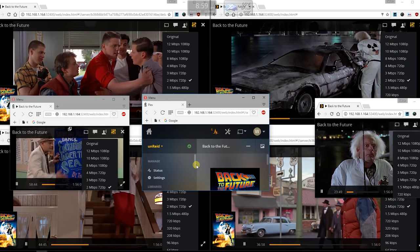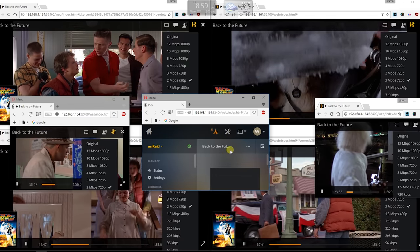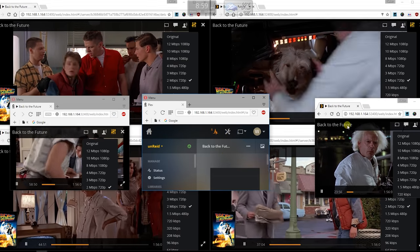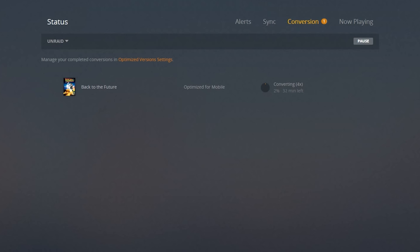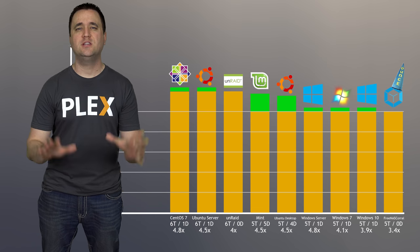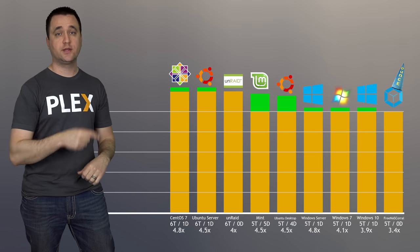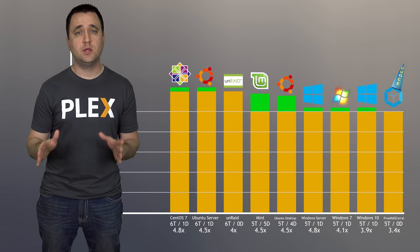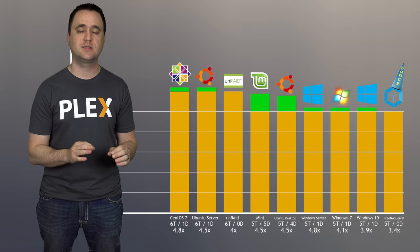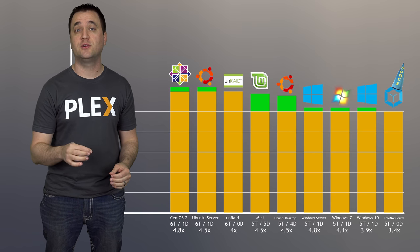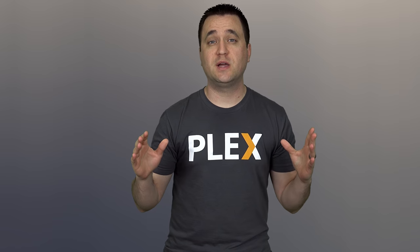Let's move on to Unraid. With Unraid, I was actually able to get six transcoded streams at the same time — a full transcoded stream more than FreeNAS Corral. Unfortunately, I was unable to get a single direct stream to play on top of the six transcoded streams without causing one of them to buffer. So we have six transcoded streams, zero direct streams. For the optimized test, I got a maximum of 4x optimization. As you can see from the chart, that basically puts Unraid above every single desktop environment I ran, but under every other server environment I have tested so far.